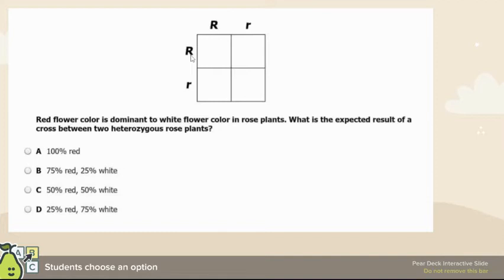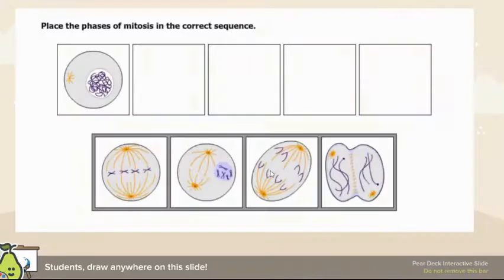We have a Punnett square with two heterozygotes. The expected result is two homozygous and two heterozygous — big R big R, big R little R, big R little R, and two little R's. Anything that has a big R in it, since red flower color is dominant, will be red. Three have big R in them, so 75% is red and 25% is white. That means B is the correct answer.